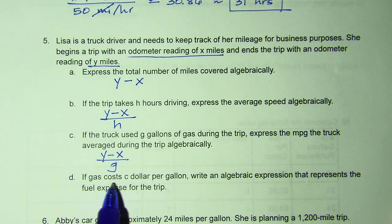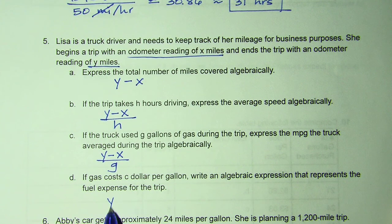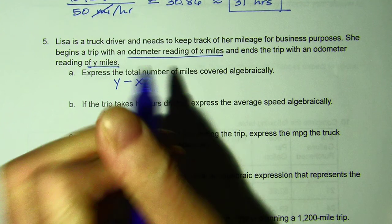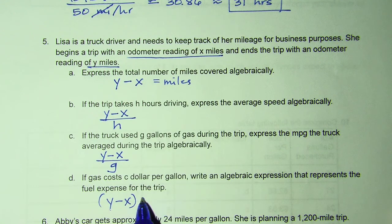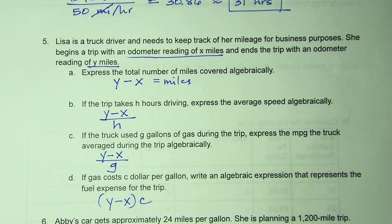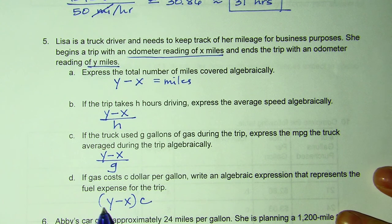If C costs C dollars, so it would be Y minus X, because this equals miles, times the cost. And per gallon, so this would have to be over G.